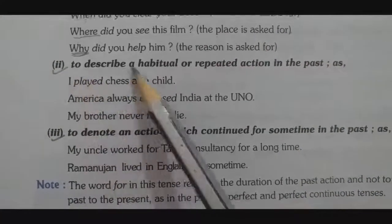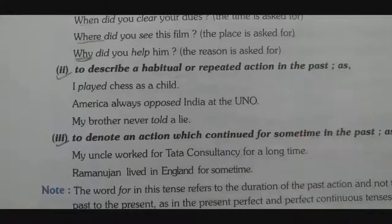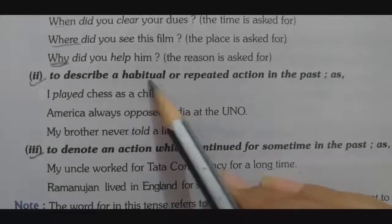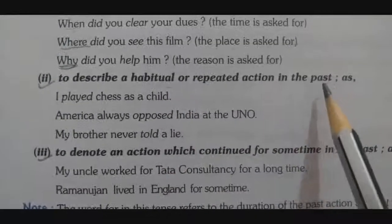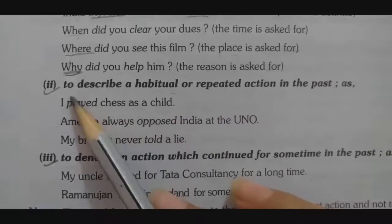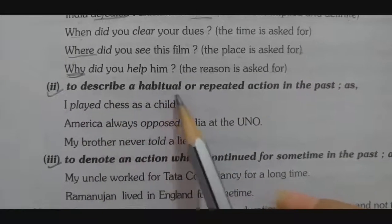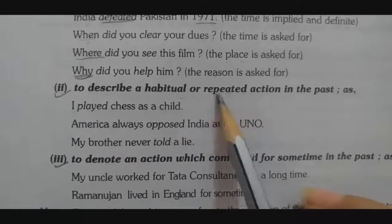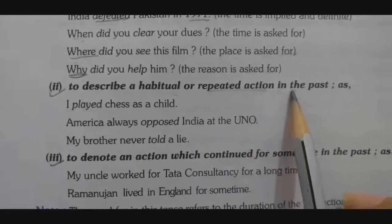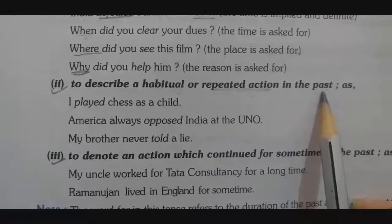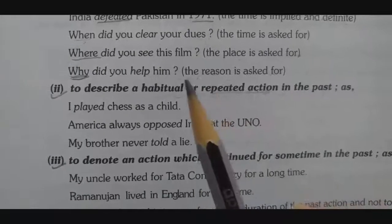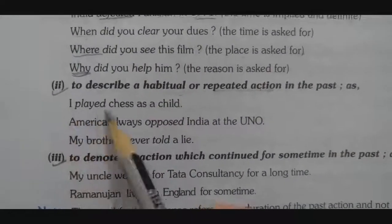Point number two: simple past tense is used to describe a habitual or repeated action in the past — similar to simple present tense for present habits. For repeated actions in the past, we use simple past tense. Example: 'I played chess as a child' — meaning when I was a child, I used to play chess. 'Played' is the past tense form.